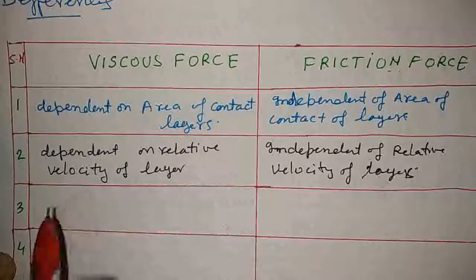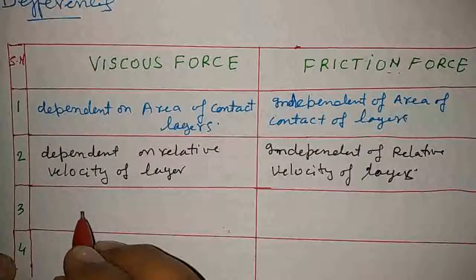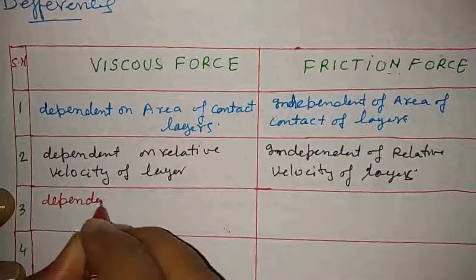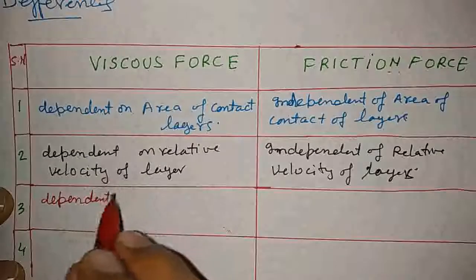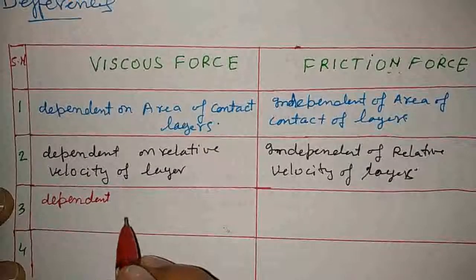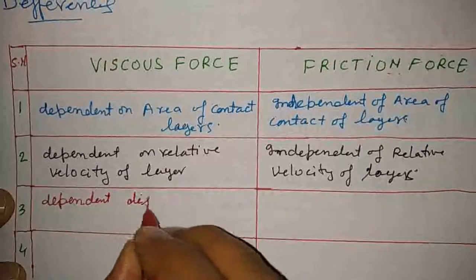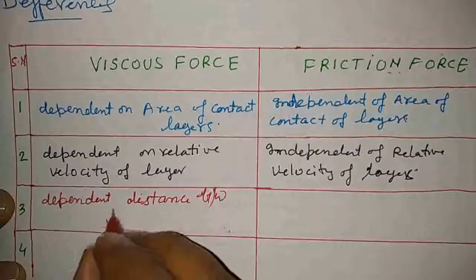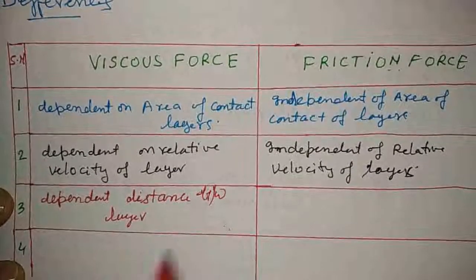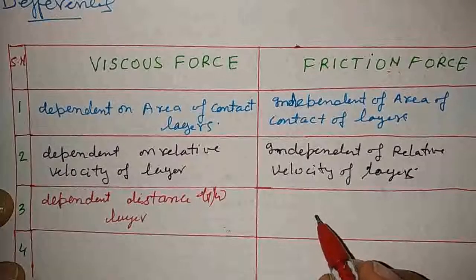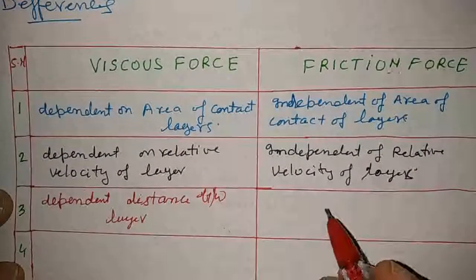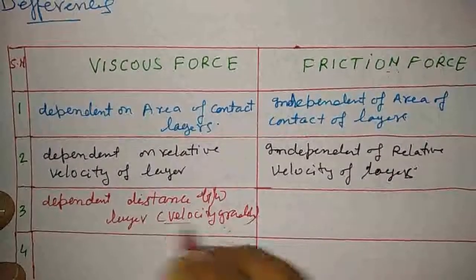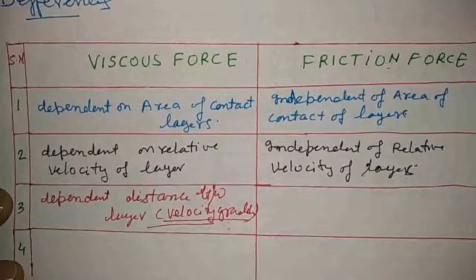The third difference is that viscous force is dependent on the distance between the layers. That is why the concept of velocity gradient is introduced in viscosity. Viscous force is based on the velocity gradient, whereas frictional force does not depend on the distance between surfaces in this way.